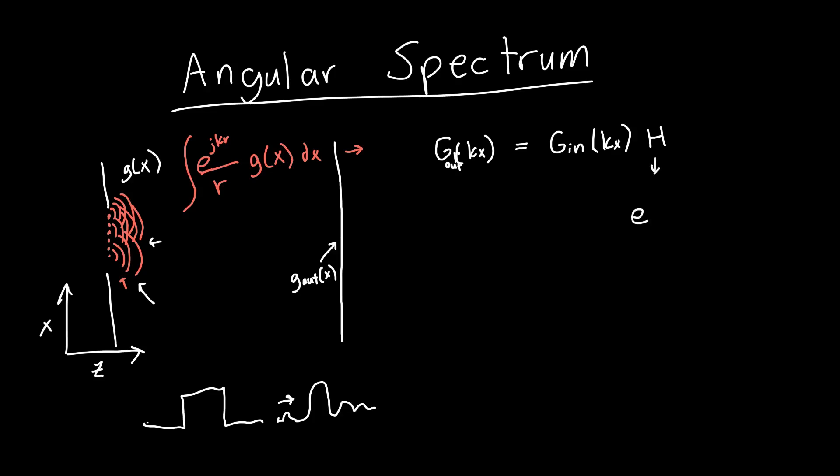And I think we said h was something like e to the minus j kx squared over 2d, I want to say, where xs is just the screen coordinate. So the coordinate on our screen. And so this was kind of interesting. And we got this from the Fresnel integral.